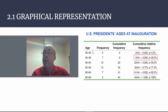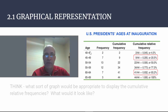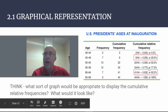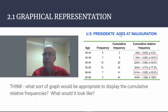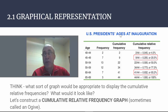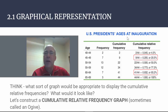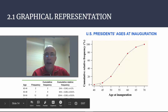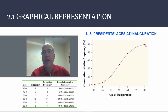93.2% means 93% of the presidents were age 64 or below at inauguration. We can plot these cumulative relative frequencies against the age ranges, and the type of graph we get is called a cumulative relative frequency graph — also called an ogive. The graph goes up from 0% at age 40–44, up to 4.5%, then 20.5%, 50%, and so on until reaching 100%. The important thing is to be able to interpret what's going on.